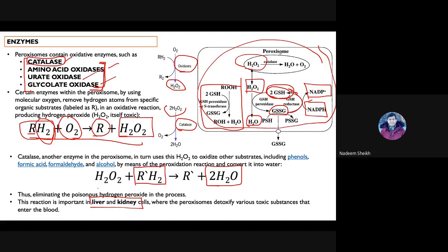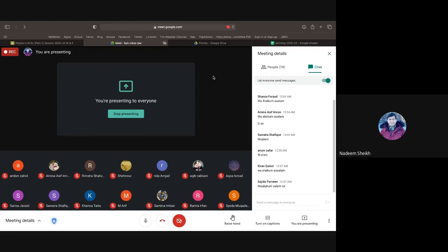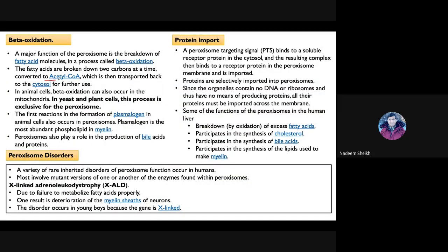Beta-oxidation enzymes are found in mitochondria, but they are also present in peroxisomes, which convert fats into acetyl coenzyme A. In animal cells, beta-oxidation mainly occurs in mitochondria, but in plants and yeast cells beta-oxidation exclusively takes place in peroxisomes, highlighting the importance of these structures in plant and yeast biology.